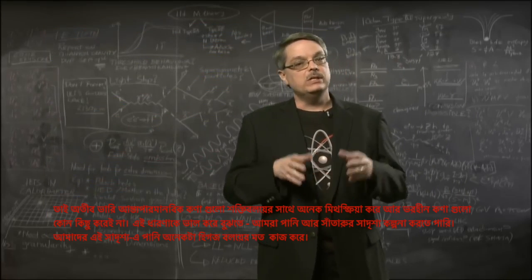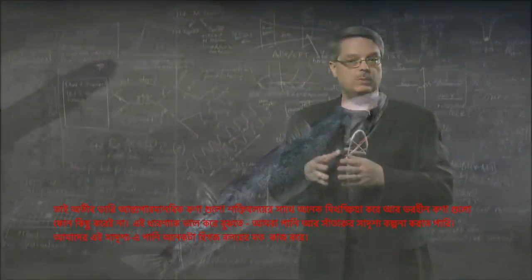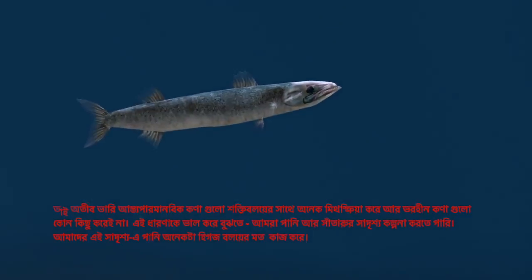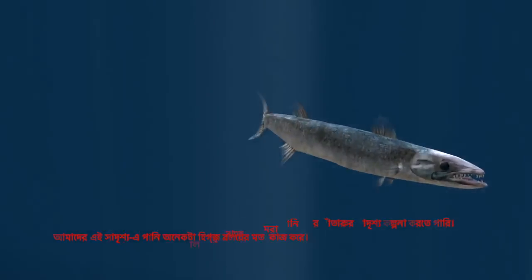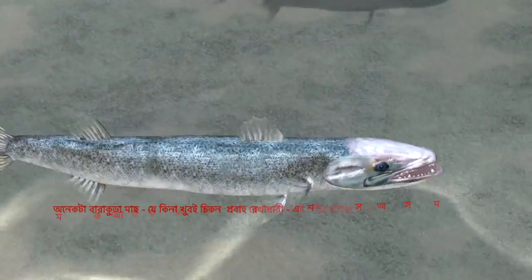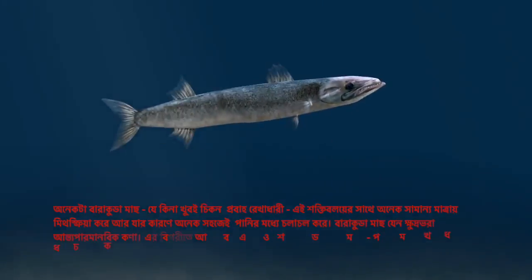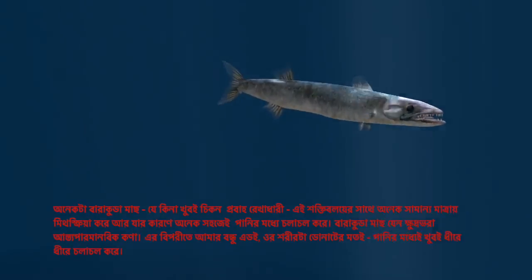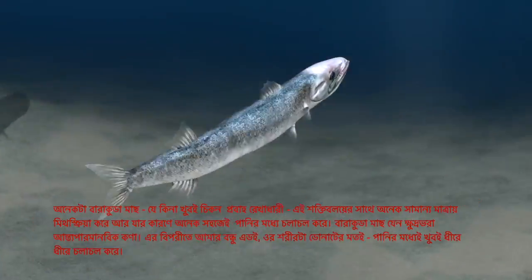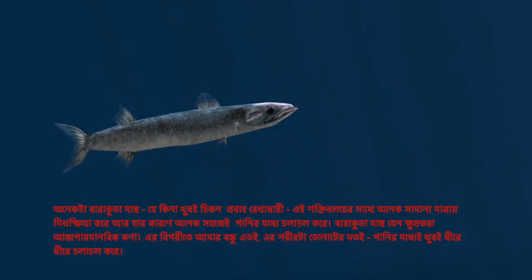To better understand the idea, we can use the analogy of water and swimmers. In our analogy, the water serves the role of the Higgs field. A barracuda, being supremely streamlined, interacts only slightly with the field and can move through it very easily. The barracuda would then be similar to a low-mass particle.